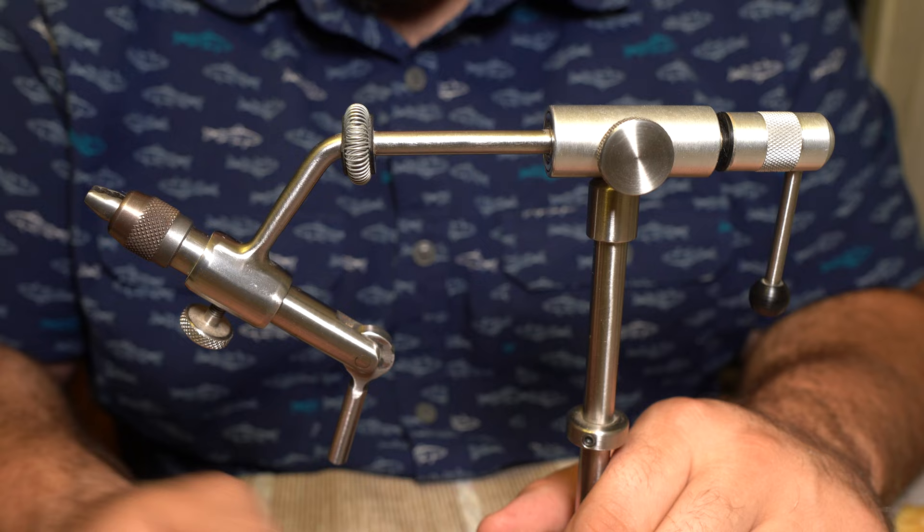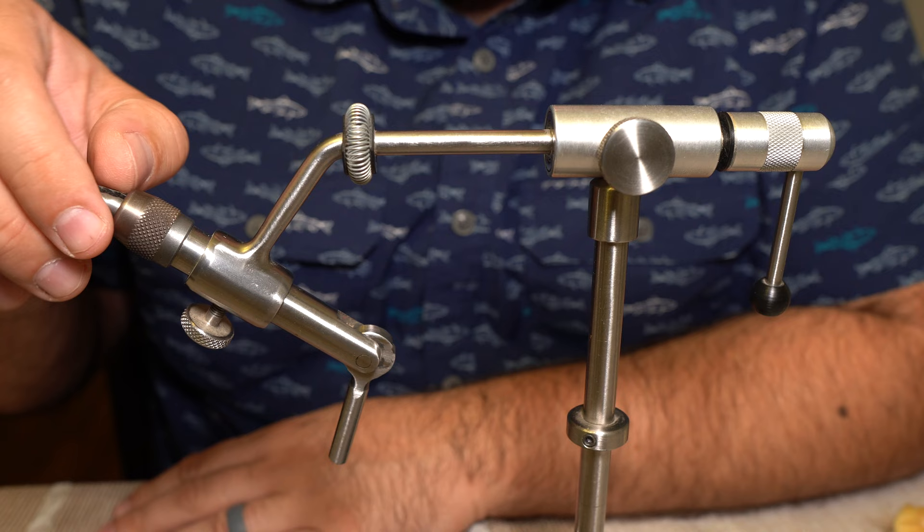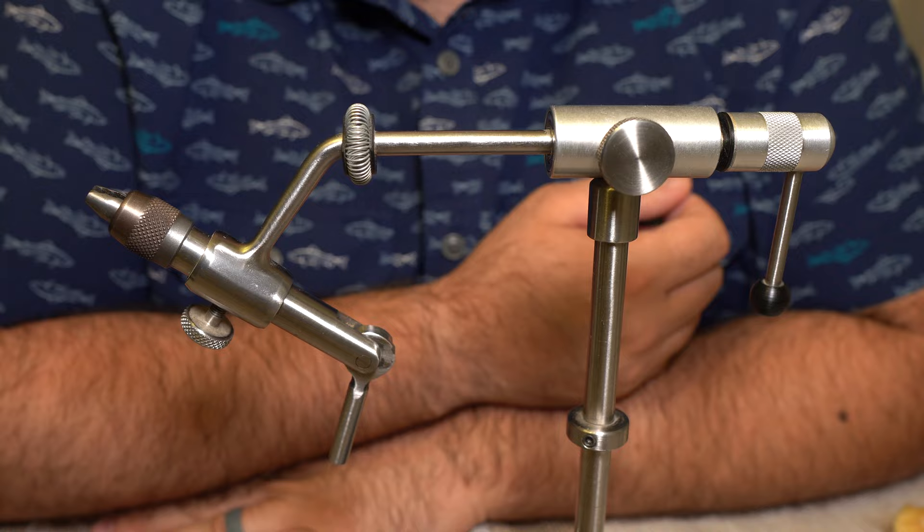You could get Regals. Regal's got that Revolution series of vises that are kind of rotational, they're not really true rotational vises. Lots of people love tying on a Regal, it doesn't rotate at all. But for me, I would need to buy the saltwater jaws for a Regal because I tie big flies.